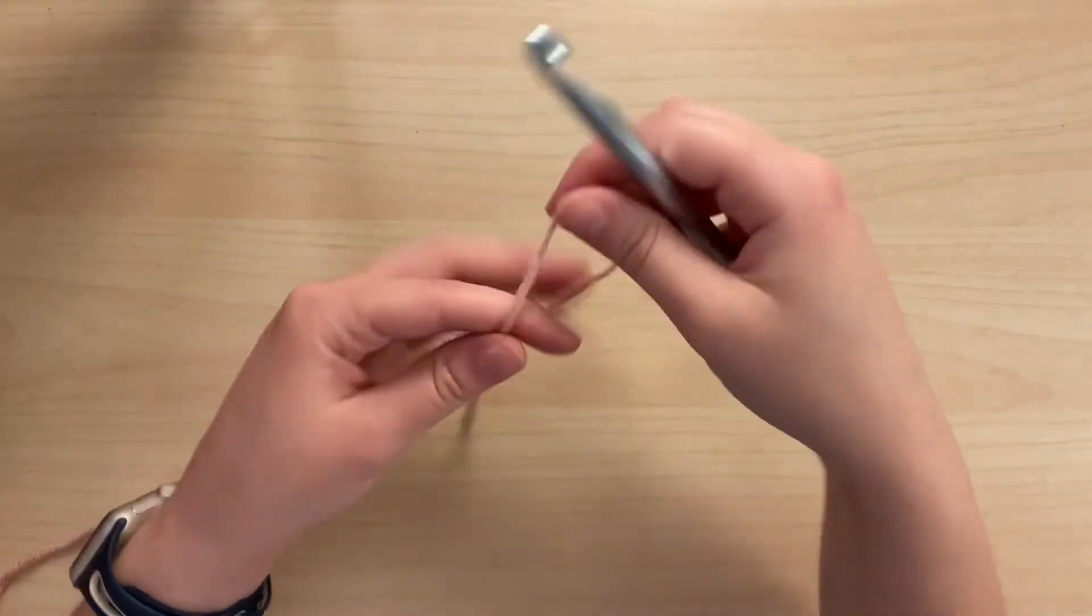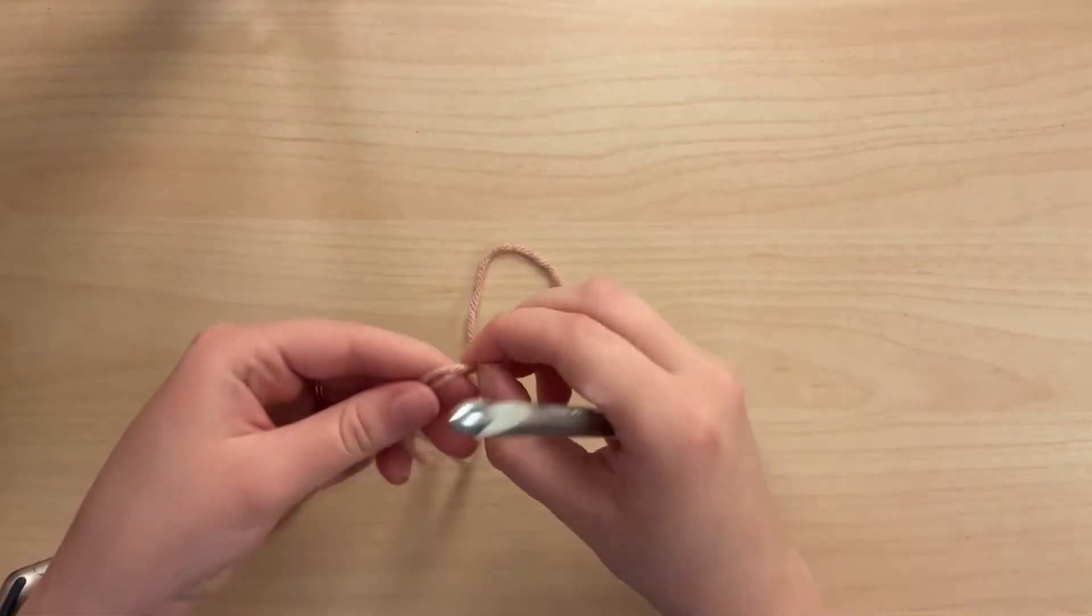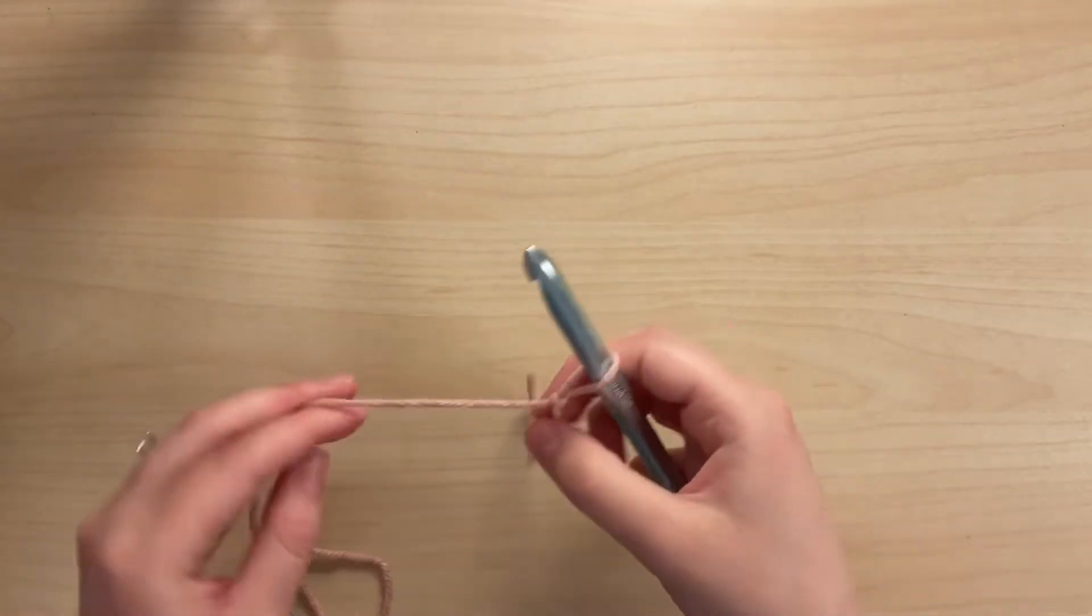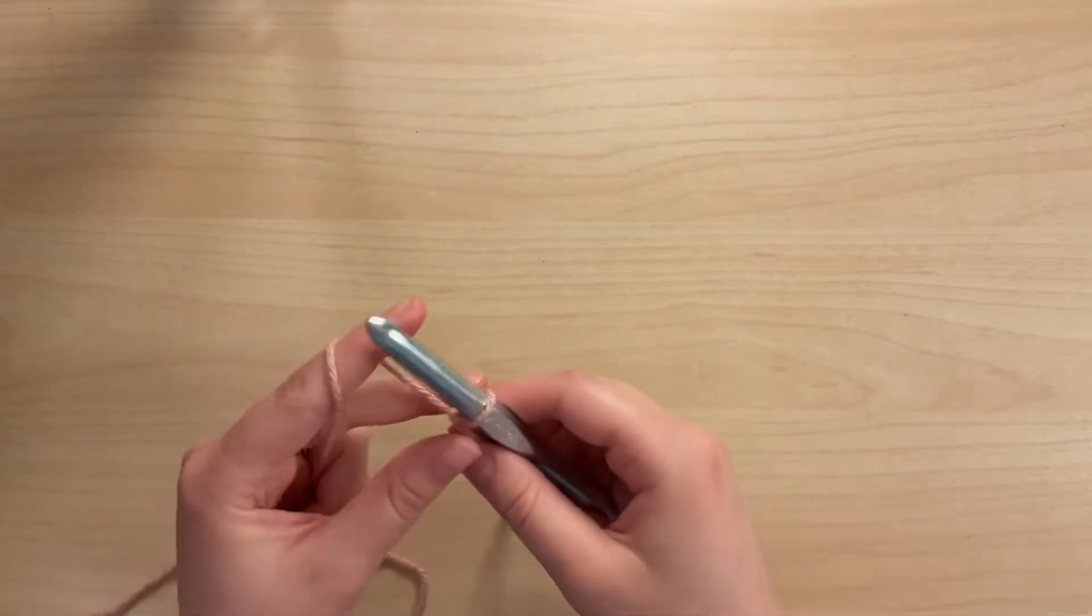When you're ready, go ahead and make a slipknot and chain multiples of two. For this scarf you will chain 220, but for this video I'll chain 14.